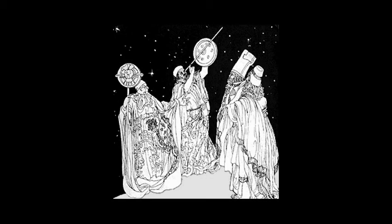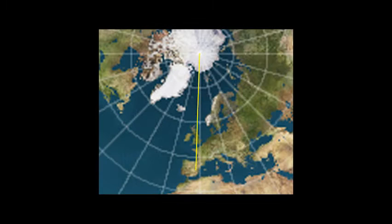Firstly, we need to be able to measure with a reasonable degree of accuracy the angle of a star taken from two places on Earth along the same line of longitude — that is, a straight line stretching away directly southwards from the North Pole.